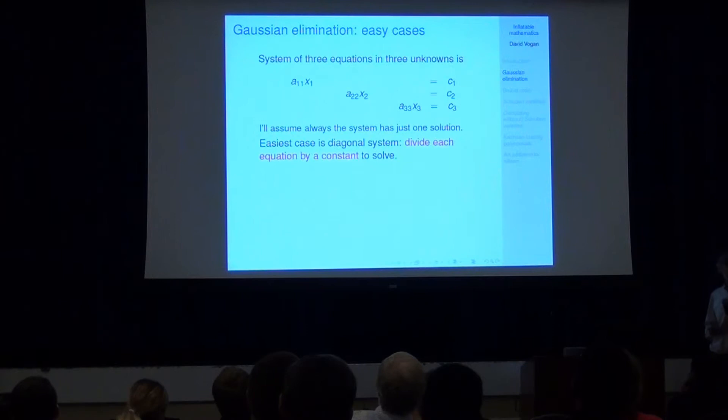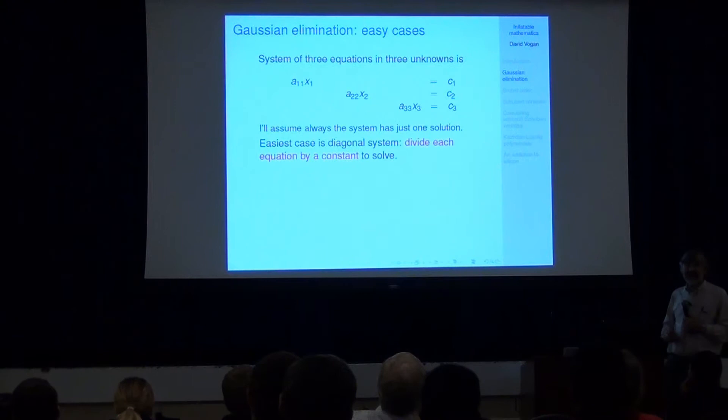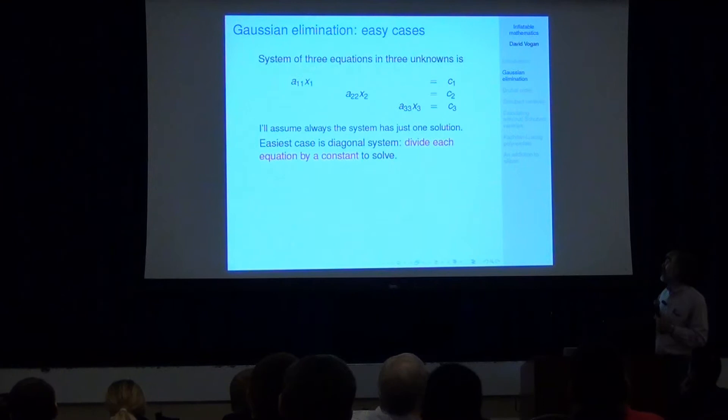Well, the easiest case to solve is a special case when the system just looks like this, and the way you solve it is you divide each of those equations by the coefficient of the unknown. And there's the solution. So that's not rocket science.